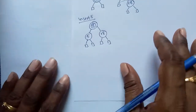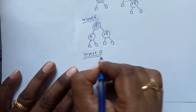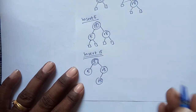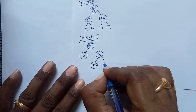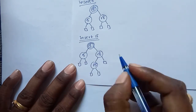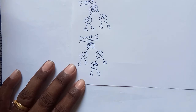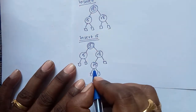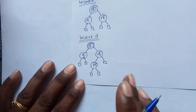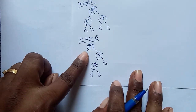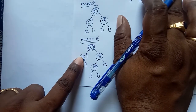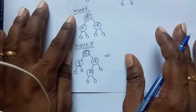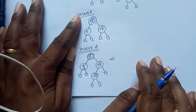Next, insert 15. This is the position of 15. After insertion, we have two consecutive red nodes, which means the Red-Black tree property is violated. Whenever two consecutive red nodes occur, check the color of the uncle node. The uncle node is 5, and its color is red. If there is no node present, it automatically contains an external node whose color is black, but here node 5 is present with red color.